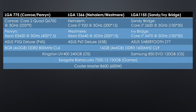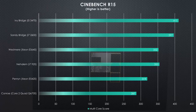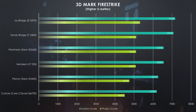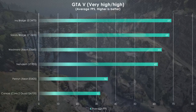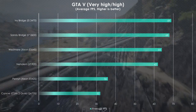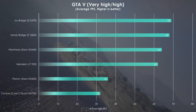The benchmarks were run with an NVIDIA GeForce GTX 770 graphics card. In Cinebench R15, we see larger gaps between Conroe, Penryn, and Nehalem, with Westmere and Nehalem neck and neck, and Sandy Bridge pulling ahead — with Ivy Bridge coming in with a marginal victory. In 3DMark Firestrike, we see much of the same story. In GTA V, things get a little more interesting: the four newest generations are in a tight race, while both Penryn and Conroe fall significantly behind.